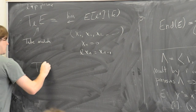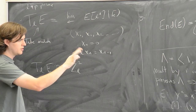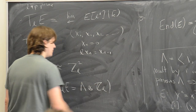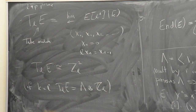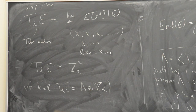In the complex case, the Tate module is naturally the lattice Λ tensored with ℤₗ. So the Tate module is the best substitute for the lattice in a general situation where you can't use analysis — that's why it's very useful. In fact, the Tate module is dual to the first étale cohomology group, and the general theory of étale cohomology generalizes the Tate module to different varieties and higher cohomology groups.